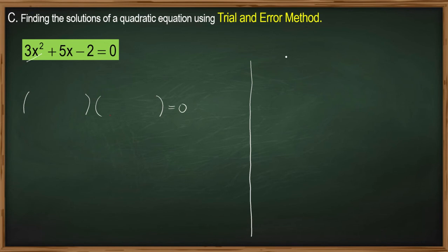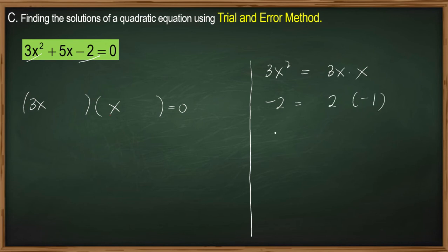First, think of the factors of 3x squared, and these are 3x times x. Then we write these factors here, and after that we think of the factors of negative 2, and this can be 2 times negative 1, or it could be negative 2 times 1. So let's have these two factors.